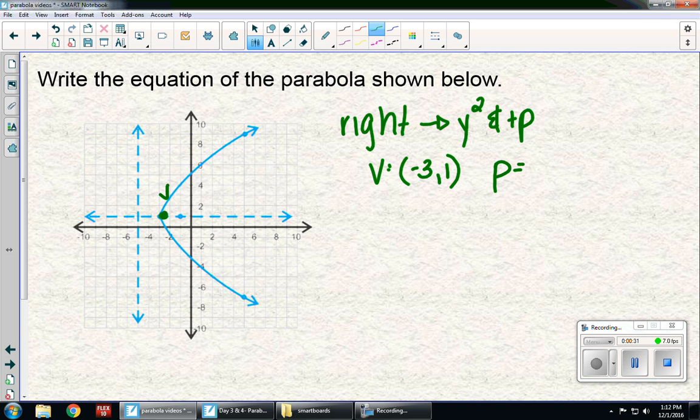And p, remember, is the distance from the vertex to the focus or the vertex to the directrix. So, my value for p is 2.